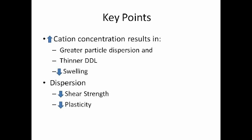To sum everything up: greater cation concentrations will result in greater particle dispersion, as well as a thinner diffuse double layer, also known as the DDL. Greater dispersion will reduce the shear strength of soil, reduce its plasticity, but increase dry density. The thinner DDL will actually decrease swelling of bentonite clay.